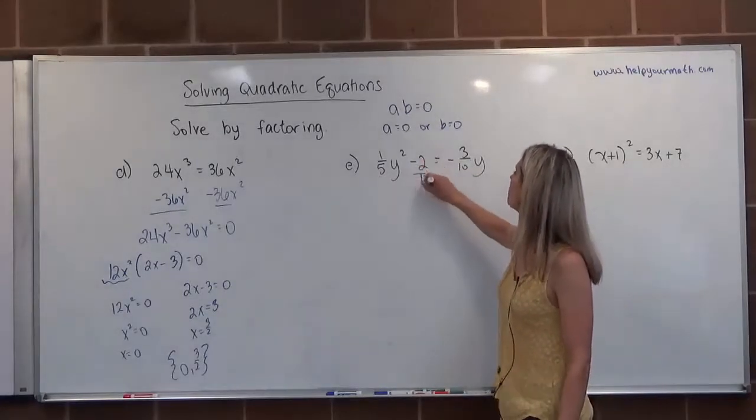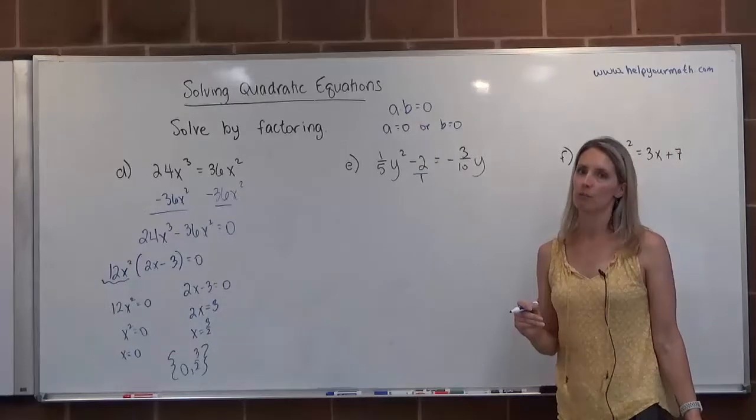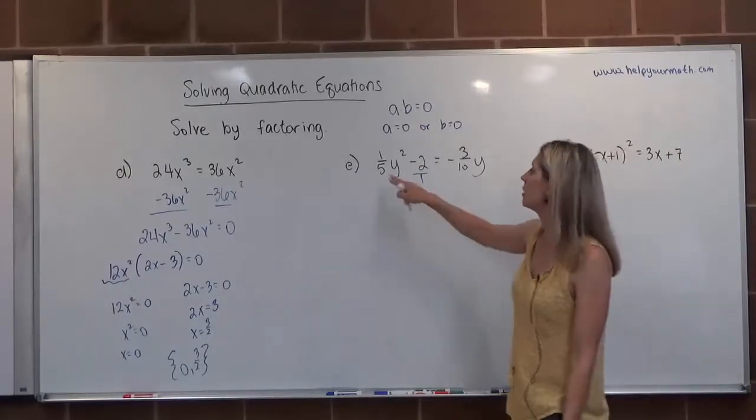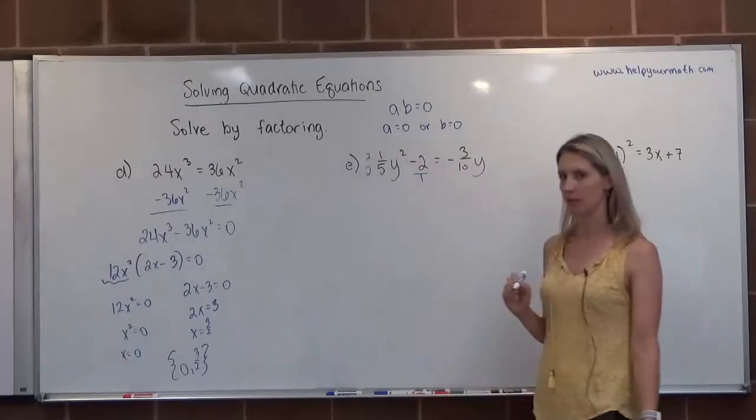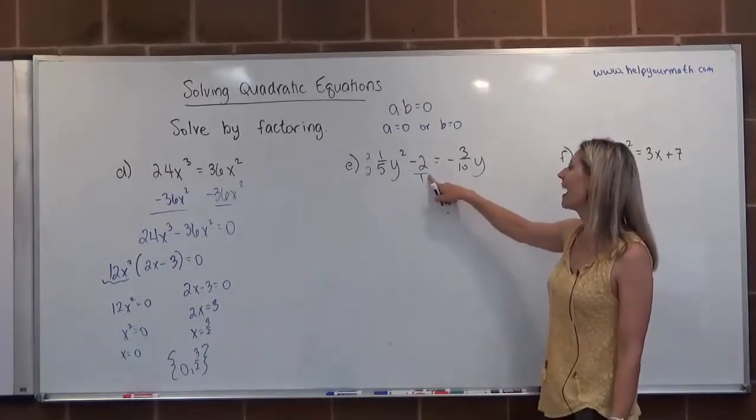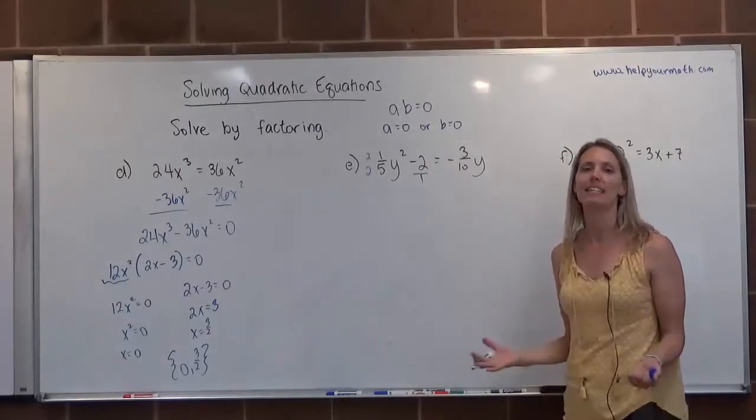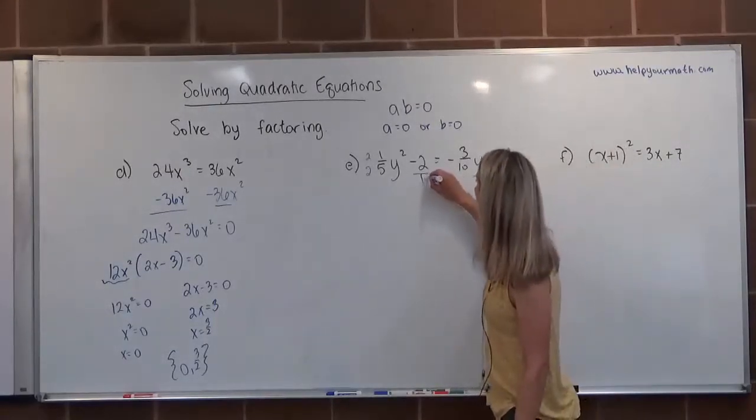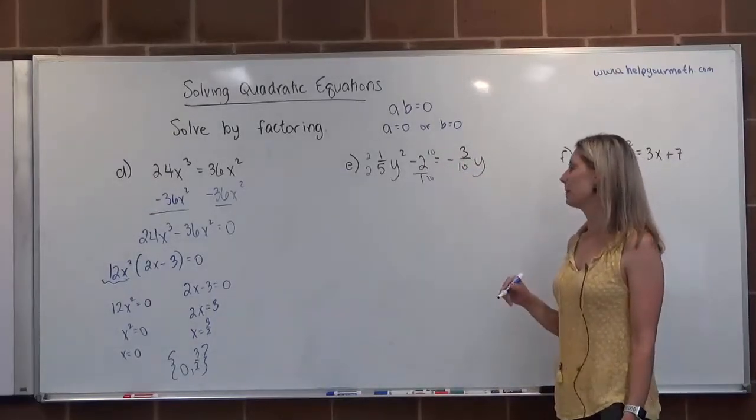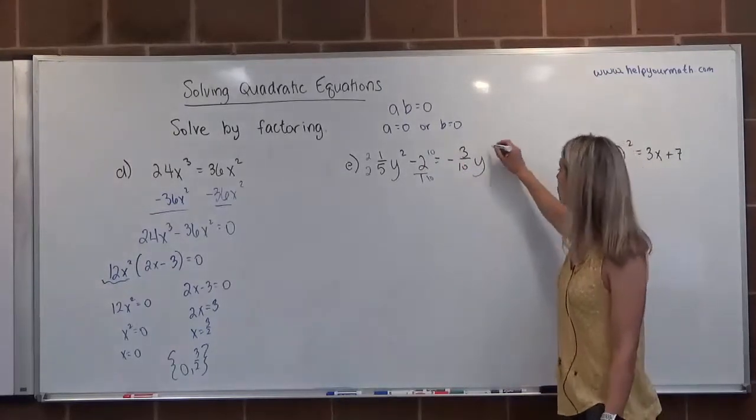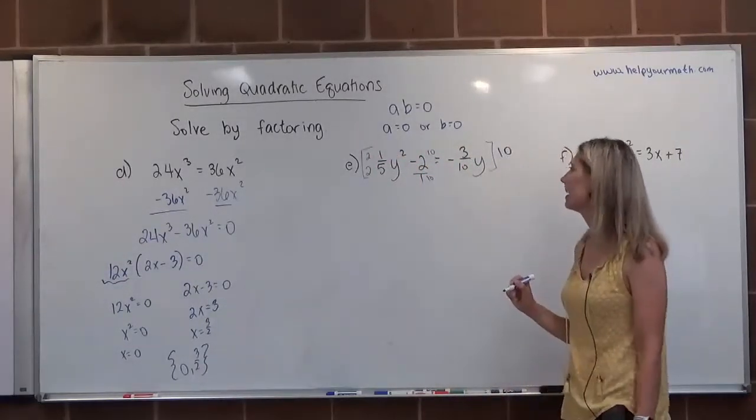My denominators are 5 and 10, so the least common multiple is 10. To get this to be a 10, I multiply by 2. 2 didn't have a denominator, so it has a denominator of 1 by default. I need it to be 10, so I multiply by 10 over 10. Now that I have everything with a denominator of 10, I'm going to multiply the whole equation by 10.